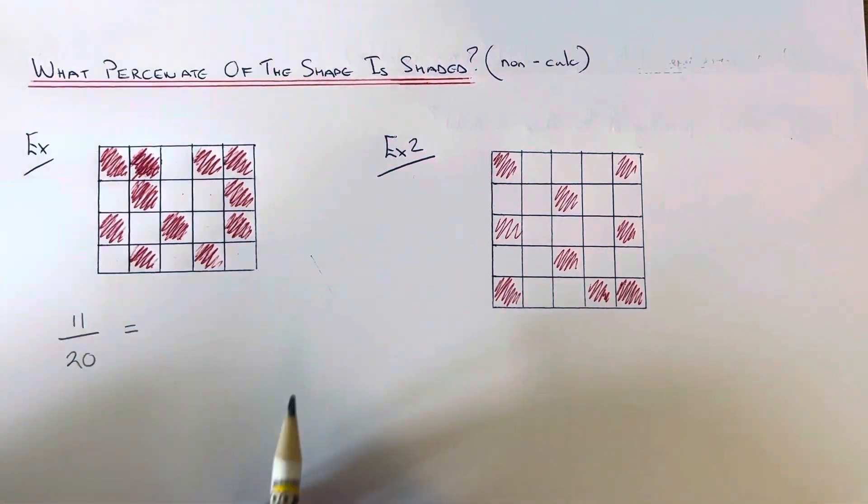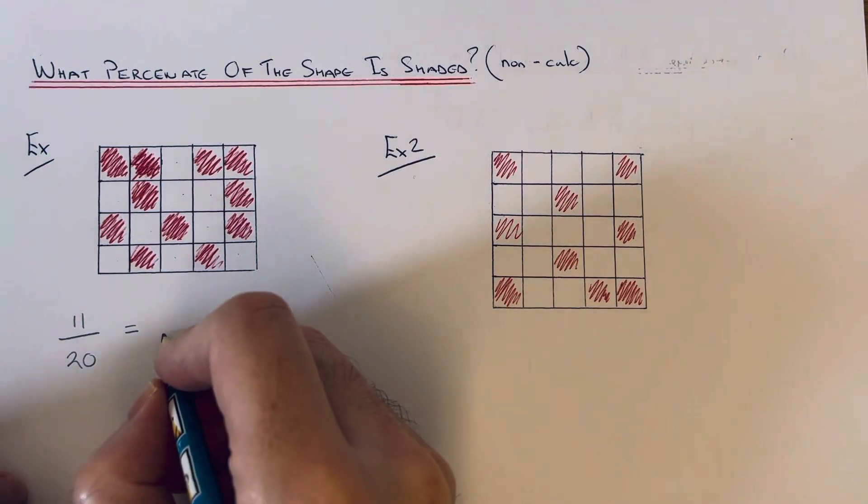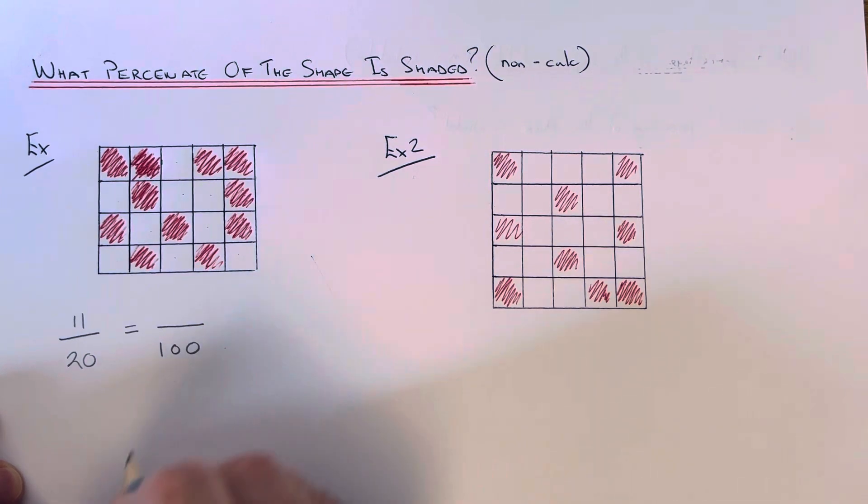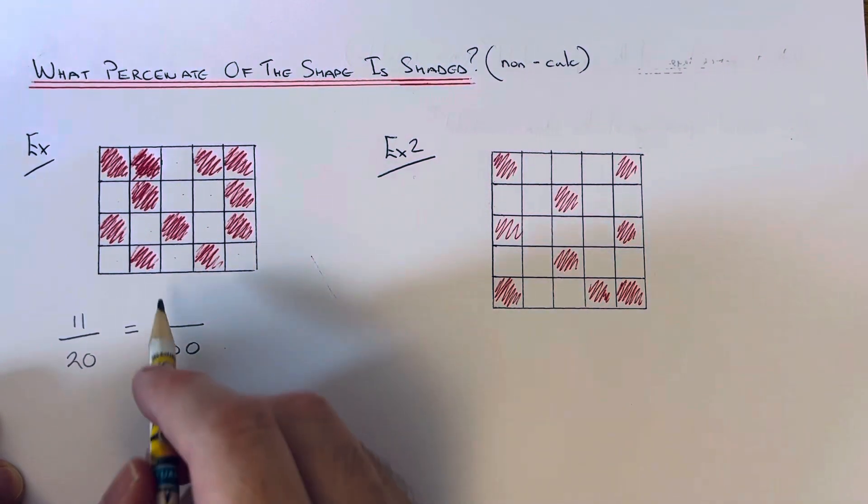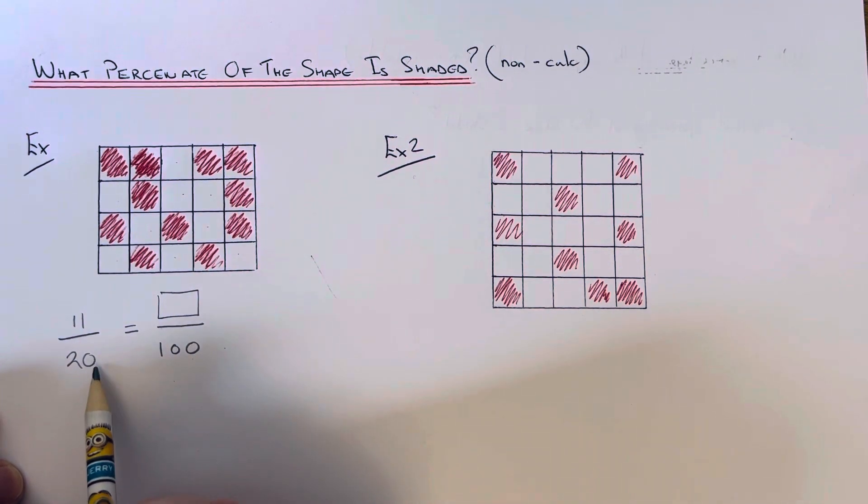So what I'm going to do next is make an equivalent fraction out of 100, because the percentage is a number which is out of 100. So I'm going to make my denominator the fraction 100. We just need to figure out now what this top number is. We've got to figure out how many times 20 goes into 100.